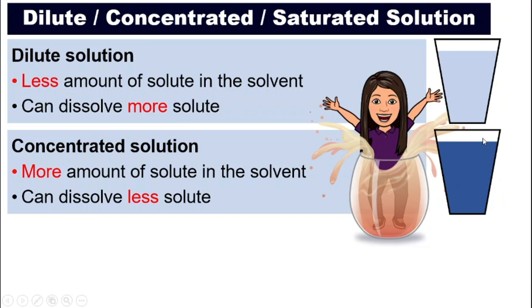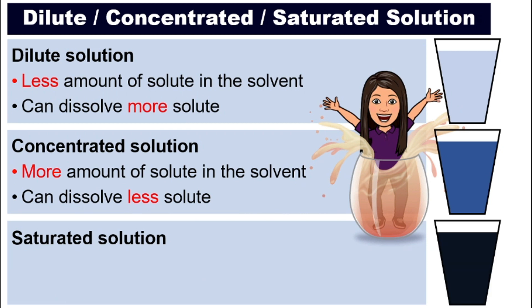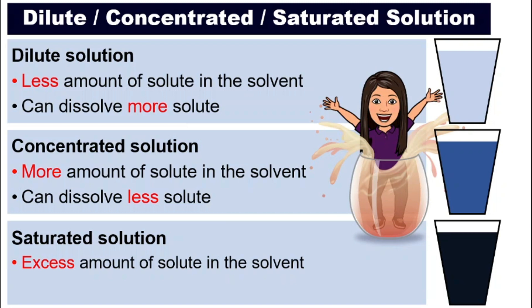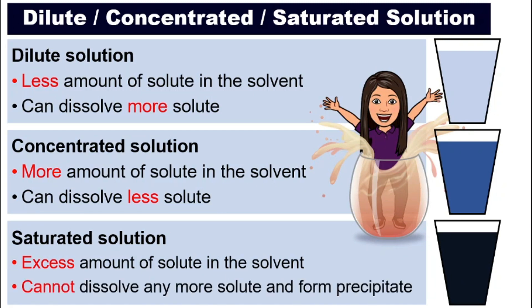If these two are sugar water, the dilute sugar solution will be less sweet, and the concentrated sugar solution will be more sweet — sweeter compared to the dilute solution. How about saturated solution? Saturated solution is when you add in a lot of solute until you cannot dissolve it anymore. It has the maximum amount of solute in the solvent. It cannot dissolve any more solute. If I add in more sugar and stir it, it will still not dissolve and it will sink to the bottom and form precipitate. Precipitate means you can see the sugar at the bottom of the glass — it will not dissolve any more.